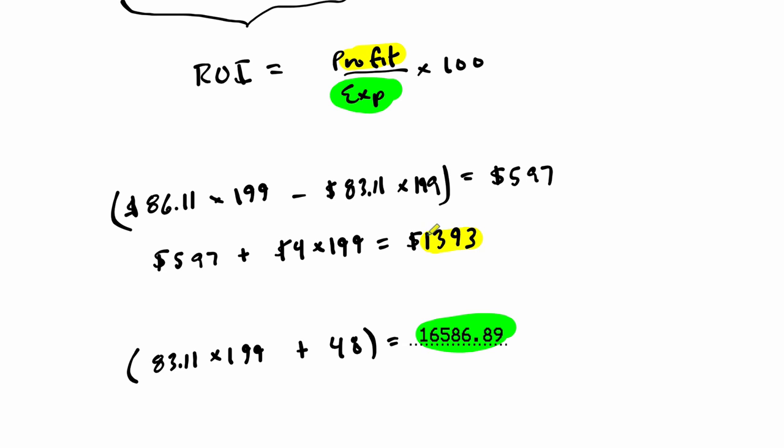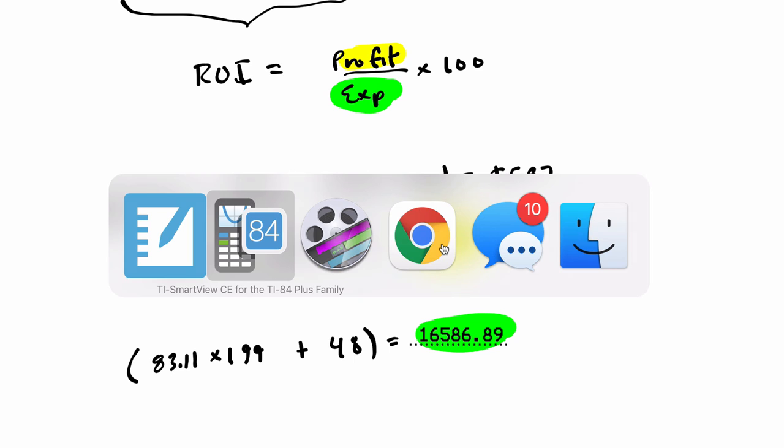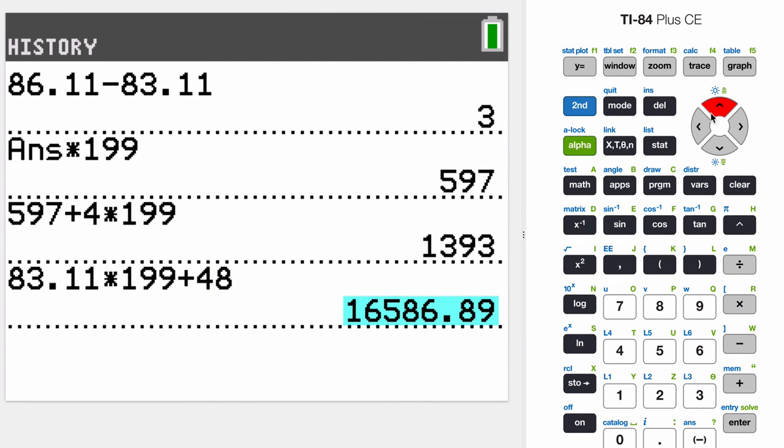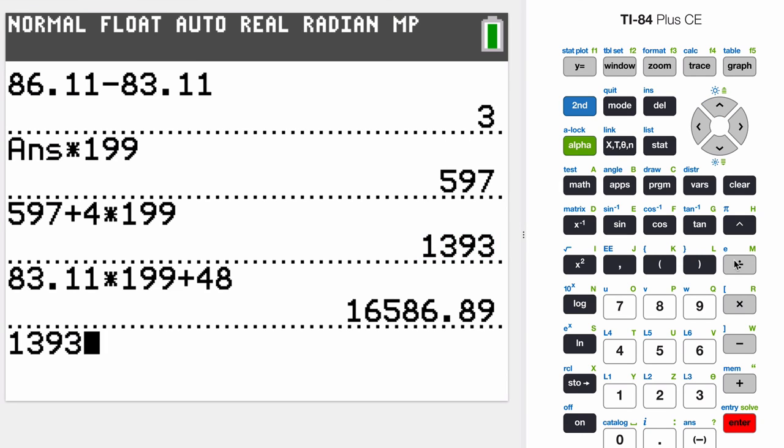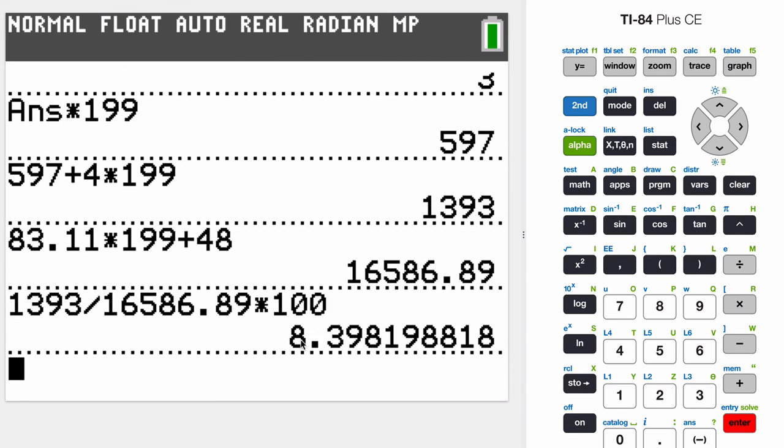So we have a profit, but we had to spend some money to get it. So it's going to be a ratio of those two. It's going to be $1393. I have this number in here already. And then divide by this number here. And then times that by 100. And we get 8.39 or 8.4%. So we are regaining 8.4% on our original investment here. And that's growing.